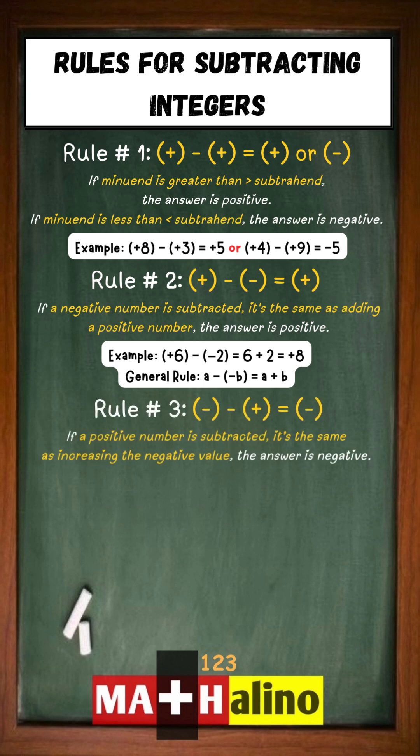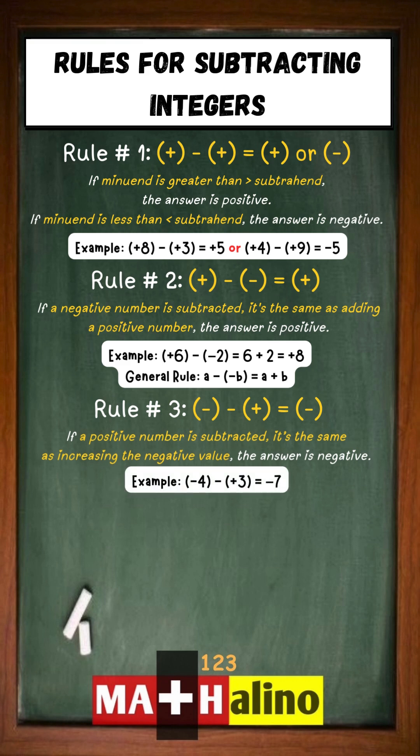Rule number three: if a positive number is subtracted, it's the same as increasing the negative value. The answer is negative. Example: negative four minus positive three equals negative seven.